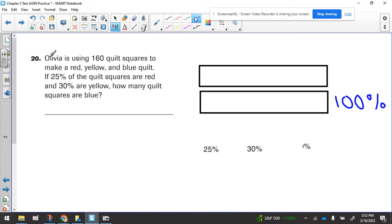Hey everybody, Mrs. Bianchi. We're looking at number 20. Olivia is using 160 quilt squares to make a red, yellow, and blue quilt. If 25% of the quilt squares are red and 30% are yellow, how many quilt squares are blue?